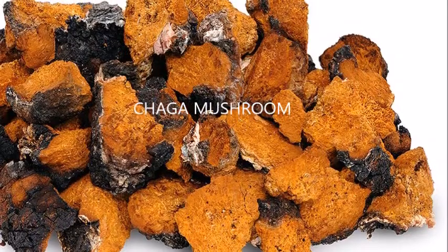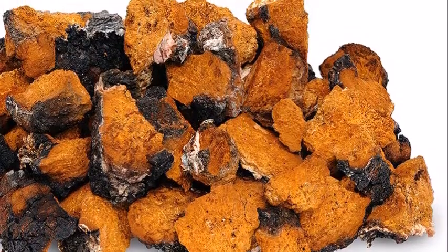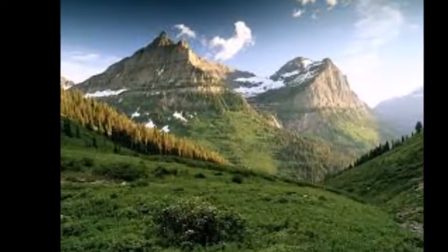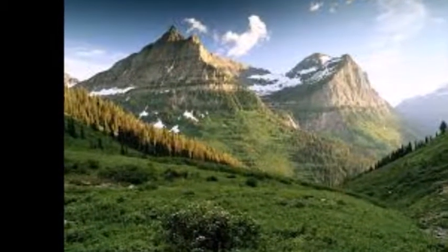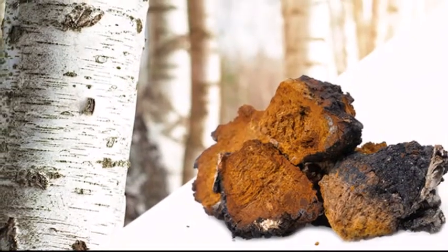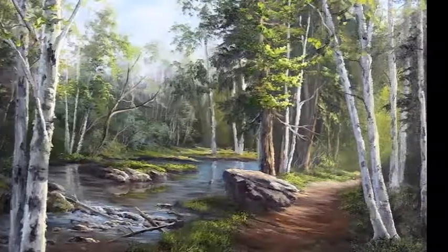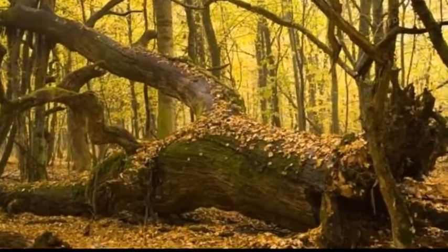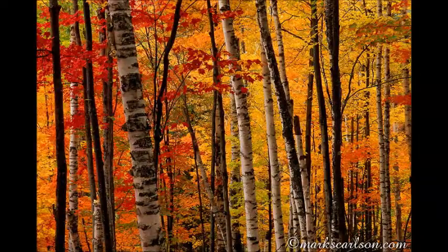Chaga mushroom is a parasitic polyporous mushroom that can be found in mountain areas in the northern hemisphere. The regions it can be found in are Canada, United States, North Asia, Siberia, Japan, Korea, and Europe. The main hosts for this fungus are hardwood trees, mostly found on birches, but can also be found on oak, alder, ash, and maple trees.